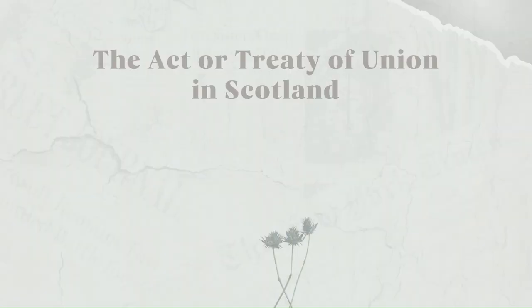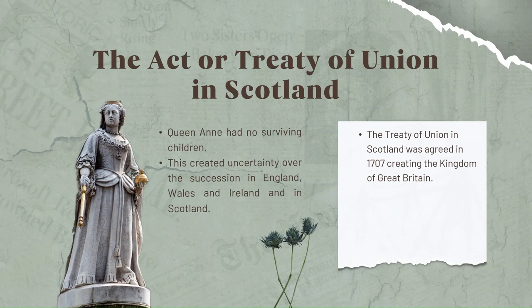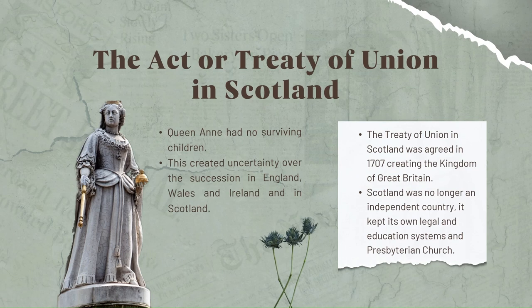The Act or Treaty of Union in Scotland. William and Mary's successor, Queen Anne, had no surviving children. This created uncertainty over the succession in England, Wales, and Ireland and in Scotland. The Act of Union, known as the Treaty of Union in Scotland, was therefore agreed in 1707, creating the Kingdom of Great Britain. Although Scotland was no longer an independent country, it kept its own legal and education systems and Presbyterian Church.